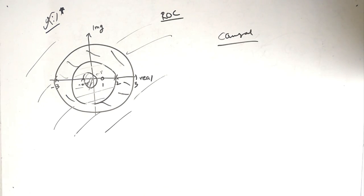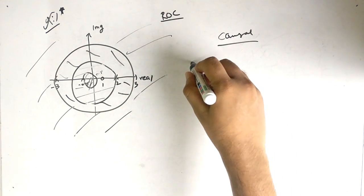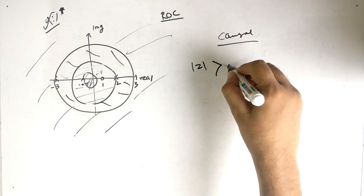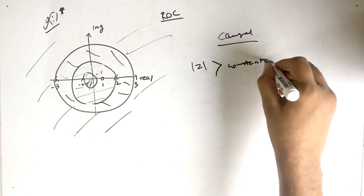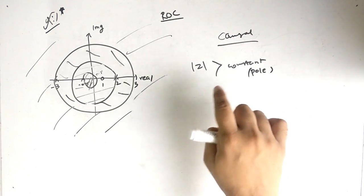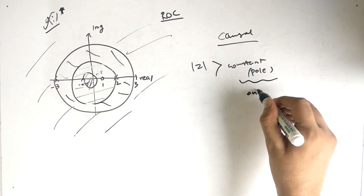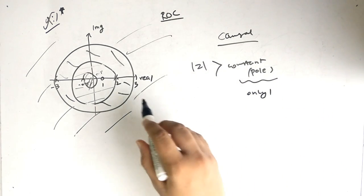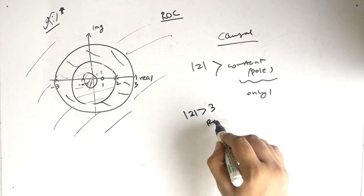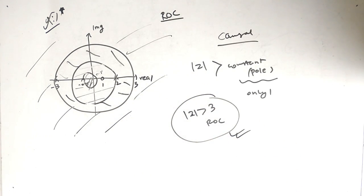The last question is: when is the system said to be causal? A system is causal when the ROC is of the form |z| > some constant — that is, greater than the outermost pole. There should be only one such region, so |z| > 3 is the ROC where the system can be considered causal.